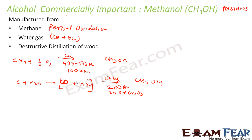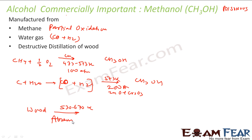The next method is destructive distillation of wood. You take wood and heat it to a high temperature — around 530 to 670 Kelvin — in the absence of air. Under these conditions, you get methanol.